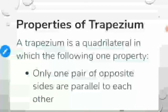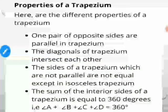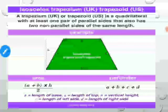Further properties of a trapezium: only one pair of opposite sides is parallel. The diagonals intersect each other but are not necessarily equal and do not necessarily bisect each other. The non-parallel sides are not equal (except in an isosceles trapezium). The sum of all interior angles of a trapezium equals 360 degrees.